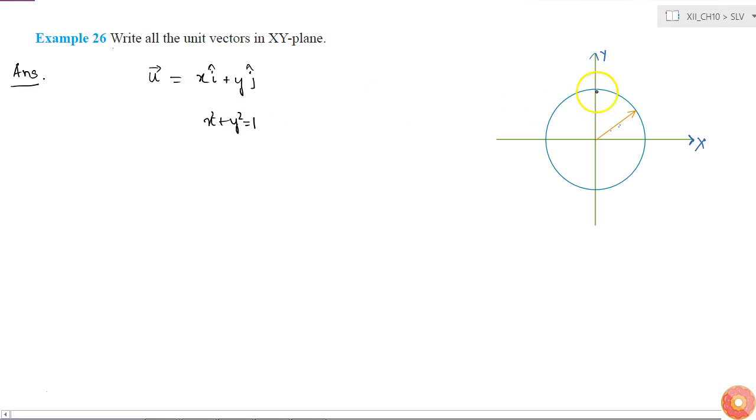So this is the equation of a circle, and we can represent this as this circle. Its radius will be 1. If this is my unit vector u and if it makes an angle theta with the x-axis,